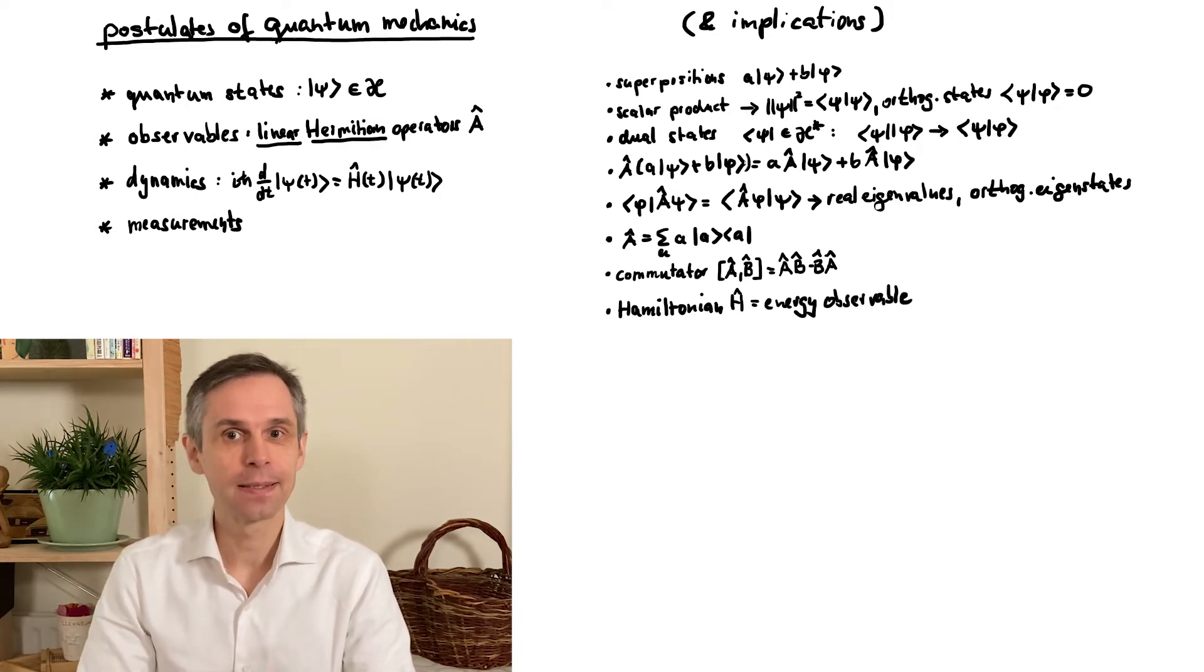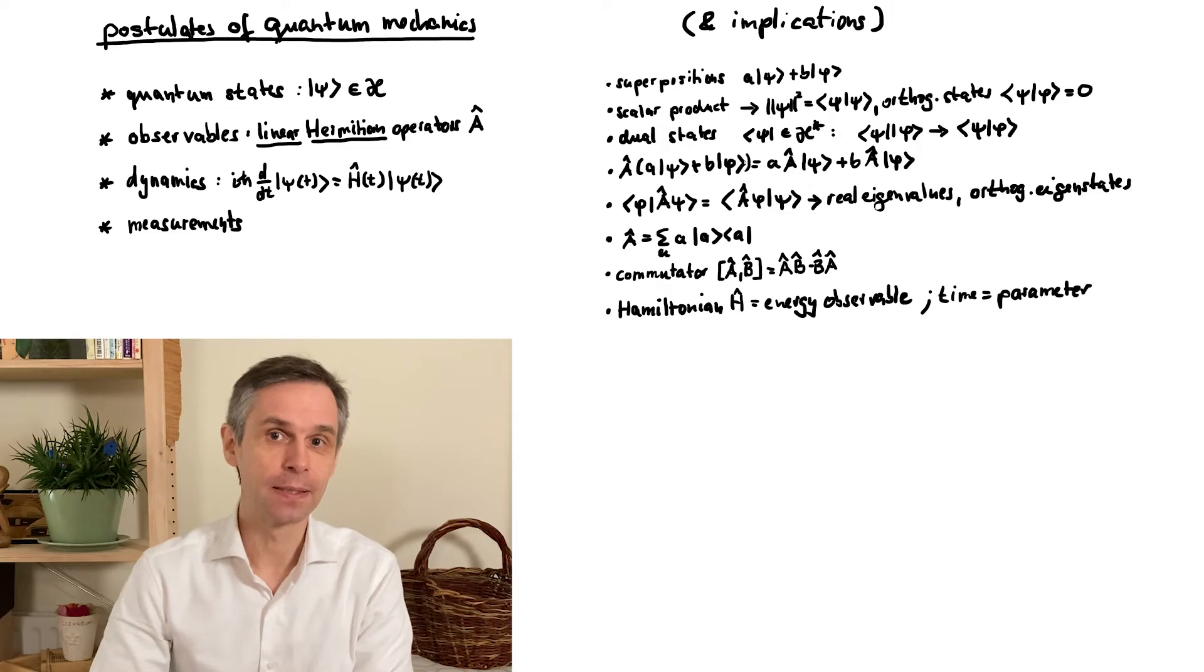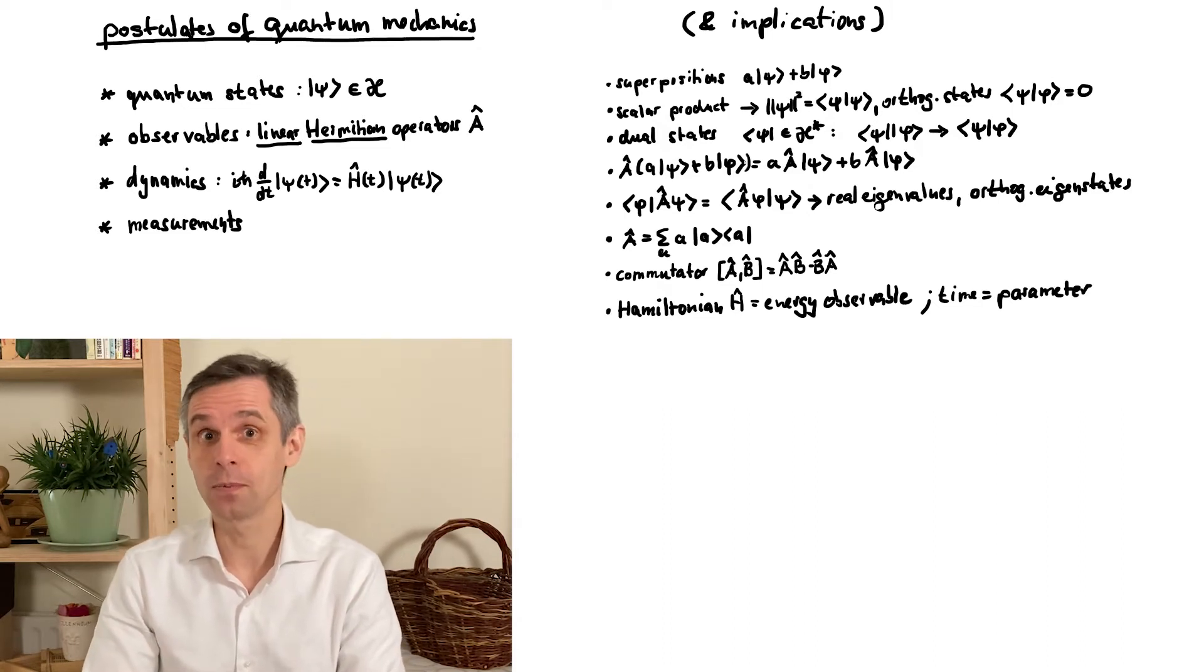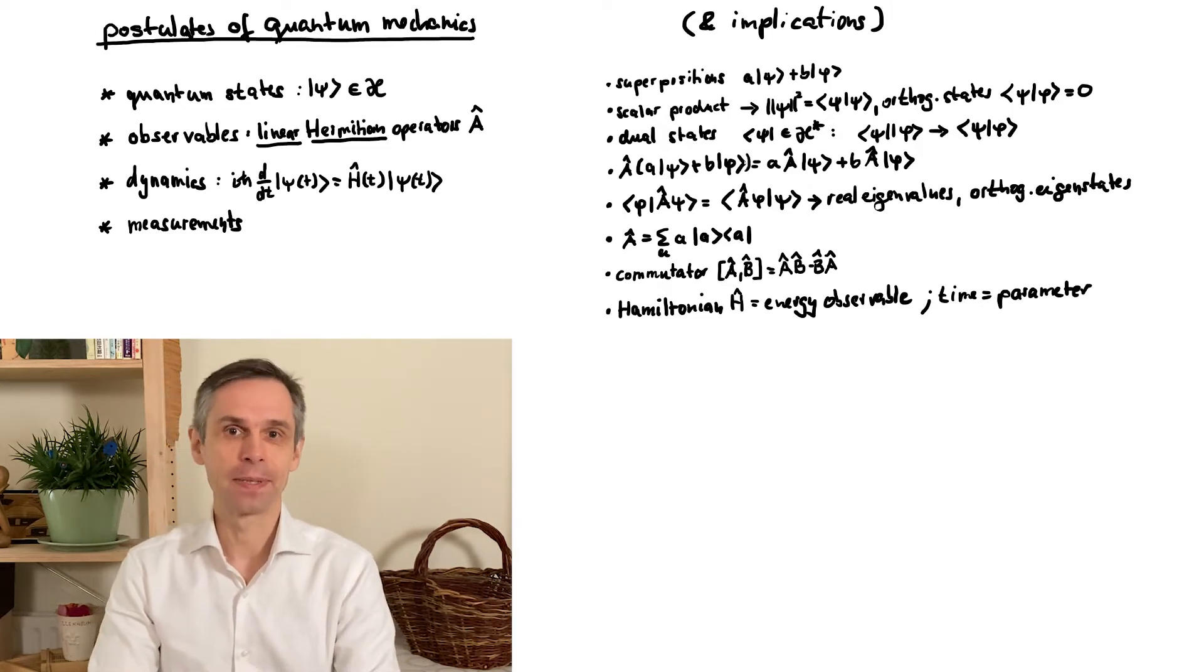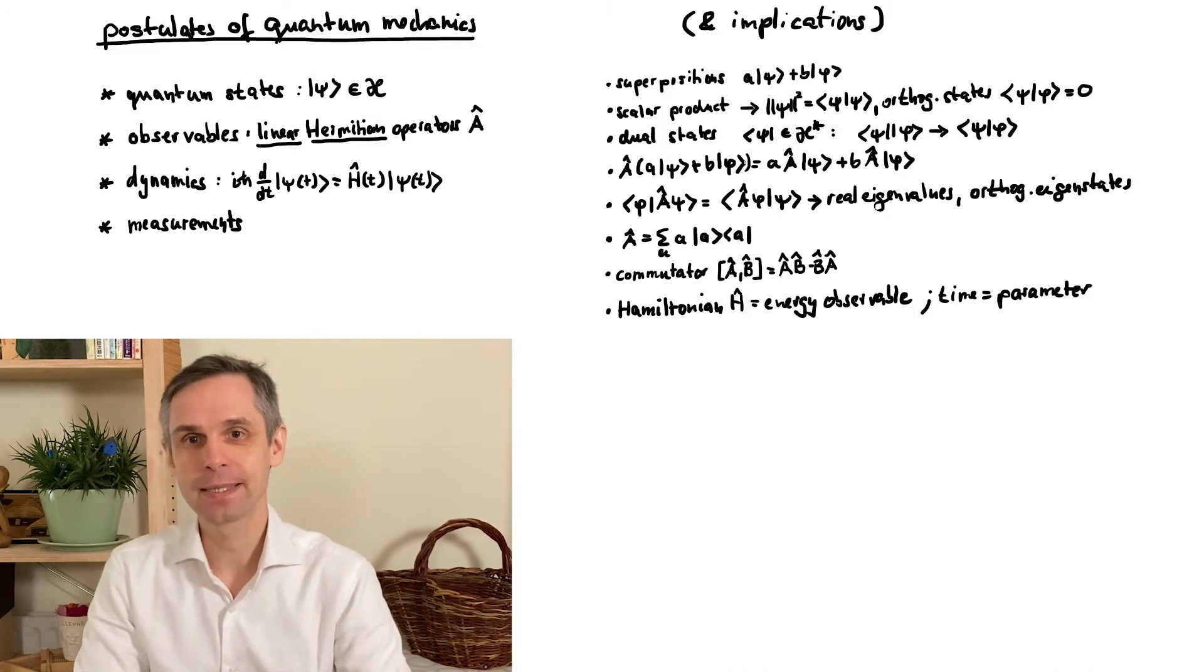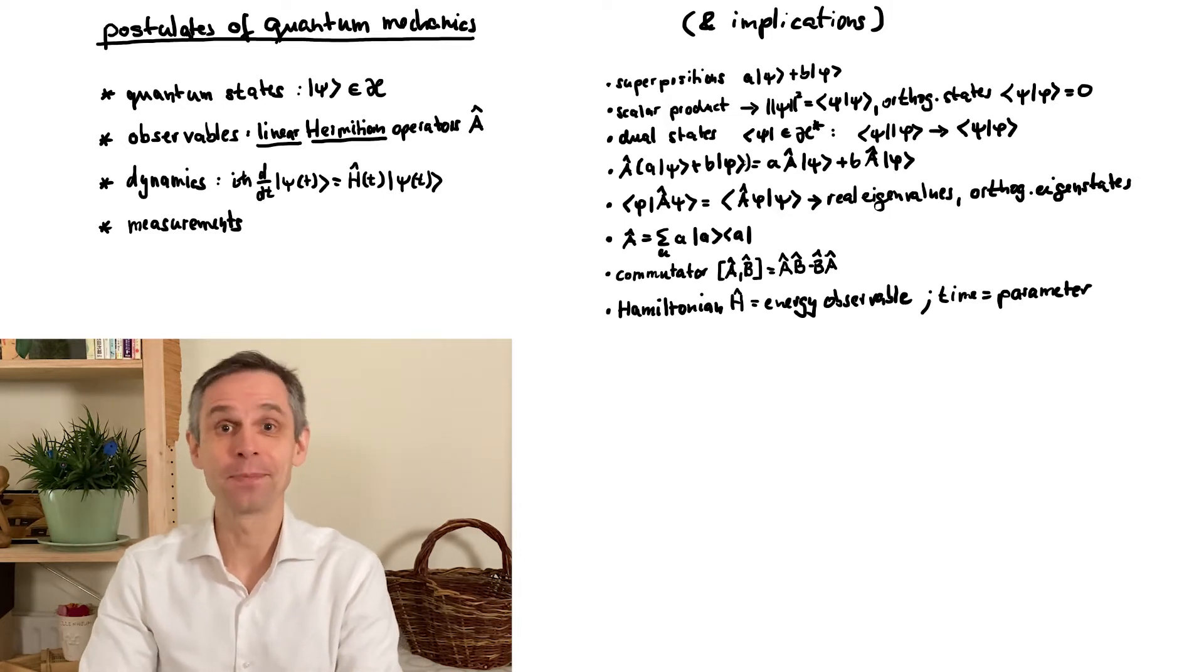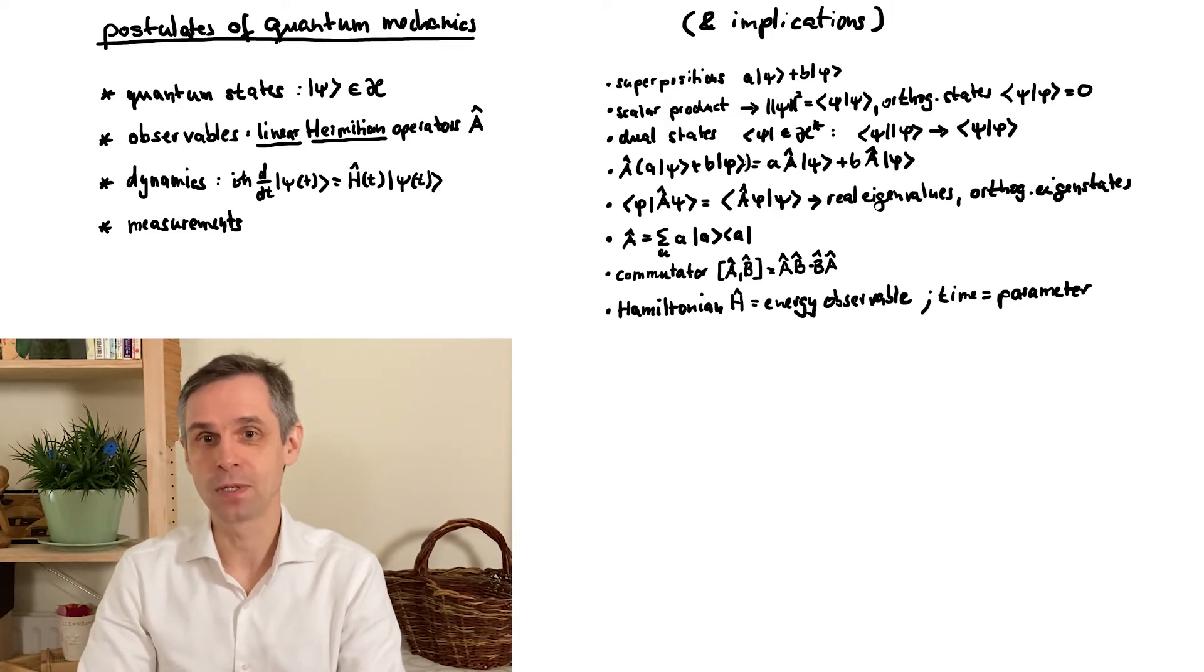As indicated, the Hamiltonian can itself depend on time. And furthermore, time here appears as a parameter. In quantum mechanics, time is not an observable. That explains the need for this separate postulate. Now, besides the nature of the quantum states, say if it is a function or a vector with just a few components, the Hamiltonian is really what distinguishes one quantum system from another, as we have seen already in our one-dimensional examples.